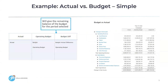To get started, we're going to take a look at this simple actual versus budget with the difference. As you can see here in the financial report writer, we have three columns: our actuals, our budget, and the budget difference, which will show the remaining balance of the budget for the period selected.